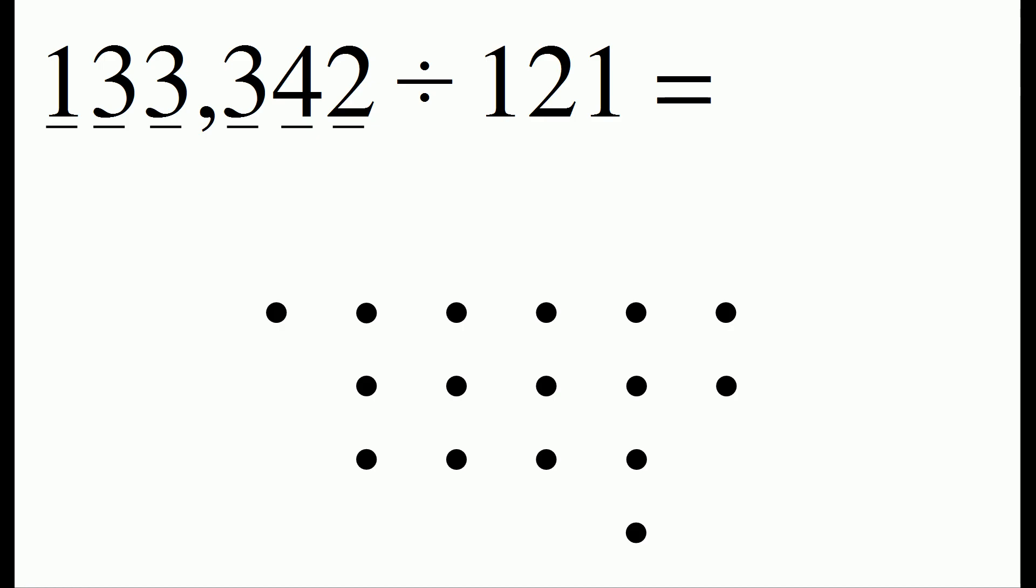Once we've drawn all the dots, we're ready to connect the dots. The number we're dividing by is 121, so that means we want to connect one dot to two dots to one more dot. Starting from the far left, let's connect one dot to two dots to one more dot.